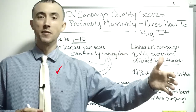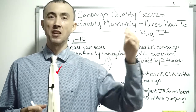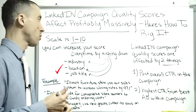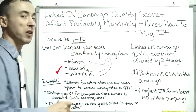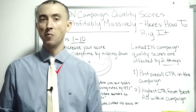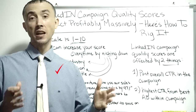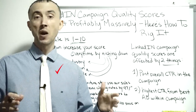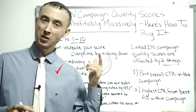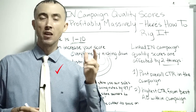Now your ad can be super laser-targeted and therefore more relevant than the typical person targeting that same audience, so your campaign quality score can be a nine-plus versus a four-plus that you would have had before. That's going to make the difference between making money and not making money. It's not impossible to pay 50 cents a click on LinkedIn.